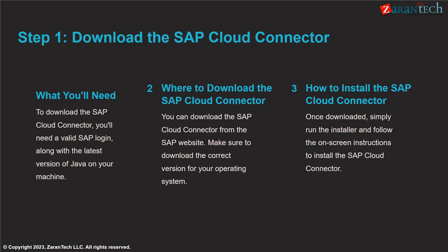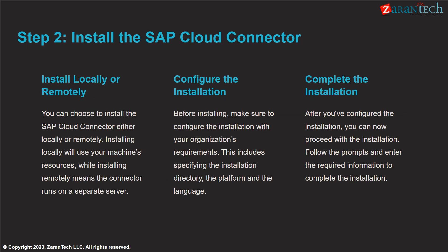The first step is to download the SAP Cloud Connector software. You'll need a valid SAP login and the latest Java version installed. Go to the SAP website to download the correct version for your operating system. Run the installer and follow the on-screen prompts to complete the installation. You can choose to install the cloud connector locally on your machine or on a remote server. Configure the installation settings such as directory, platform and language before proceeding.